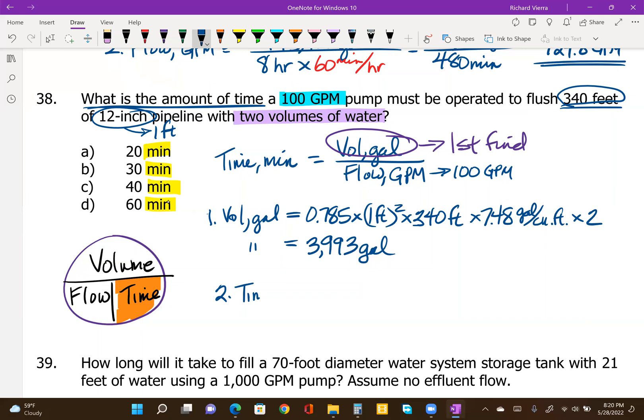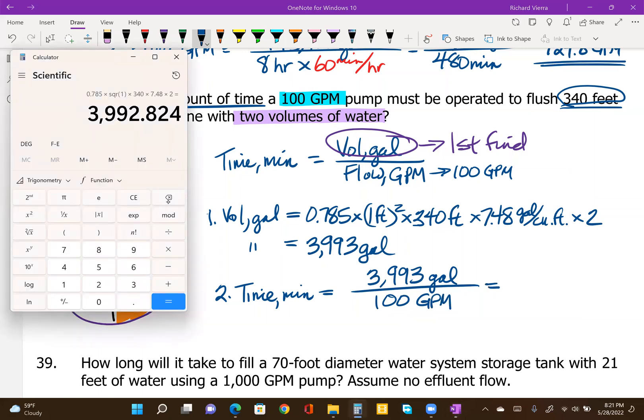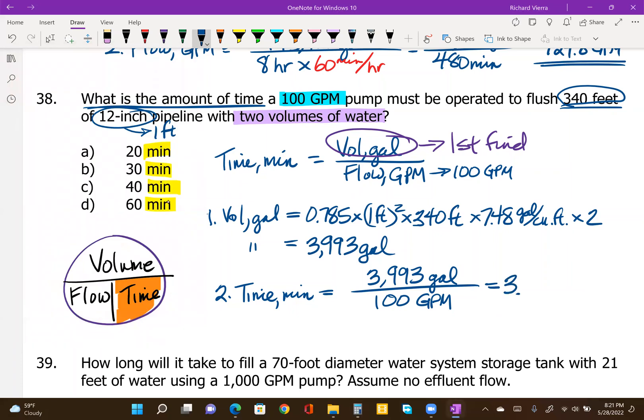So now we have that number as well as the flow rate of 100 gallons per minute. So we can set up the time calculation in minutes. So we do the volume, 3,993 gallons, divided by the flow of 100 gallons per minute. So divide that 3,993 number by 100, and we end up with 39.9 minutes. So we'll go with answer C. Run the pump for 40 minutes, and that should flush it through twice.